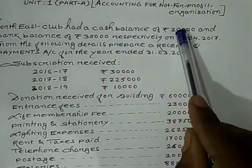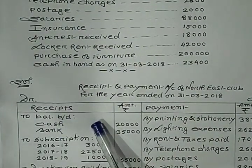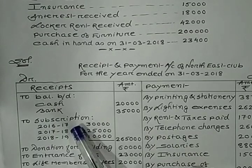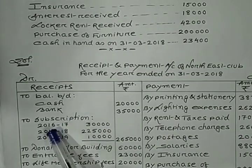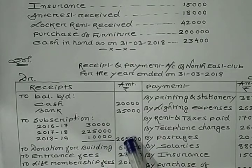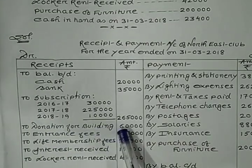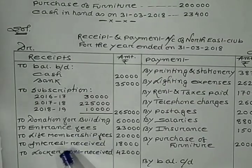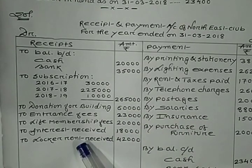Opening cash balance and opening bank balance are recorded on the debit side of Receipt and Payment Account. Then subscription — subscription received is also given, so whether it is last year, current year, or next year subscription, all are recorded on the debit side of Receipt and Payment Account. Add all three together and write the total. Donation for building is also received, so it is also recorded on the debit side. Entrance fee also received, life membership fee also received — debit side. Interest received also debit side. Locker rent also received — debit side. Whatever is received goes on the debit side.